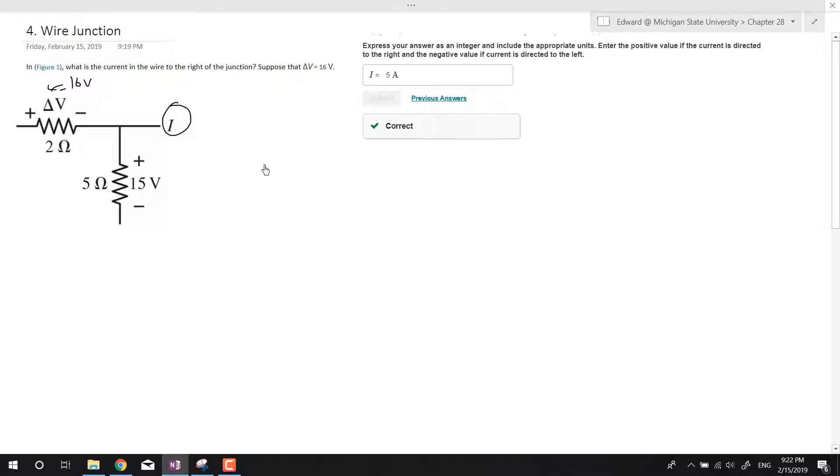So I'm pretty sure this is Kirchhoff's junction rule - whatever goes in must go out. So we want to find the current. We know the equation IR, just because it's mentioned a lot in lecture. So the current using this equation is going to be the voltage of the battery, the change in V, divided by the resistance.